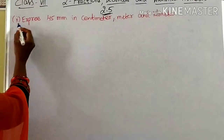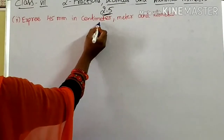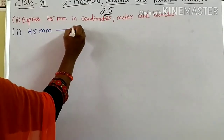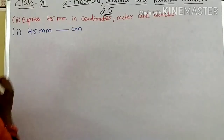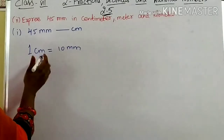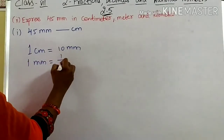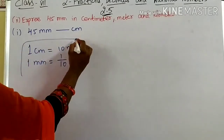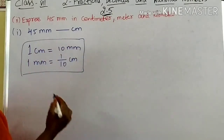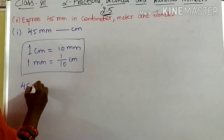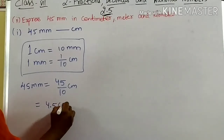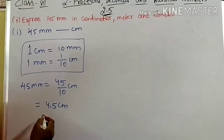In the second one: Express 45 millimeters in centimeters, meters, and kilometers. First part: convert 45 millimeters into centimeters. You know 1 centimeter is nothing but 10 millimeters. Then 1 millimeter is 1/10 centimeters. So 45 millimeters is 45/10 centimeters. 45/10 means 4.5 centimeters. So 45 millimeters is nothing but 4.5 centimeters.